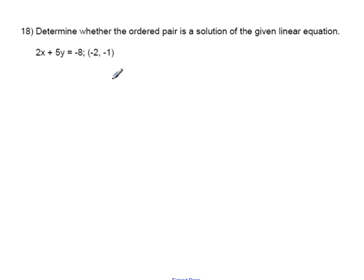Number 18. Determine whether the ordered pair is a solution of the given linear equation. Here's the linear equation, and here's the ordered pair. Remember that the first number in an ordered pair is x, and the second number is y. So if it is a solution, if I substitute in the value for x and y, it will be a true statement. Let's see if that works.